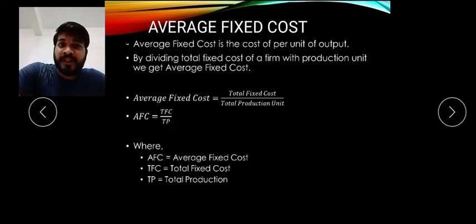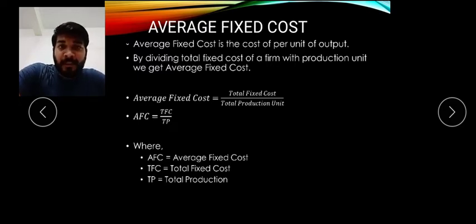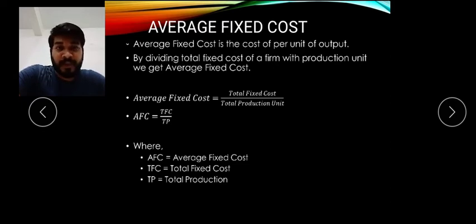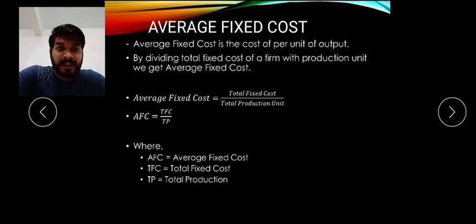For example, in our previous example, fixed cost was fixed at rupees 100. Suppose units are 10, so 100 divided by 10 gives us the average fixed cost. Average means cost per unit — 100 divided by 10 is 10 per unit. Now if units become more — suppose units are 20 — fixed cost remains the same because fixed cost is not affected by production. So 100 divided by 20 gives 5 rupees average fixed cost.